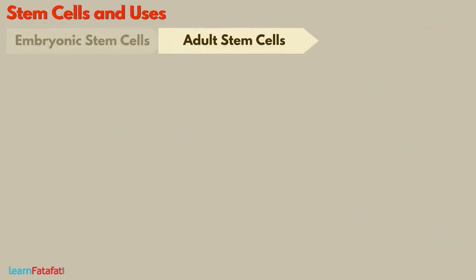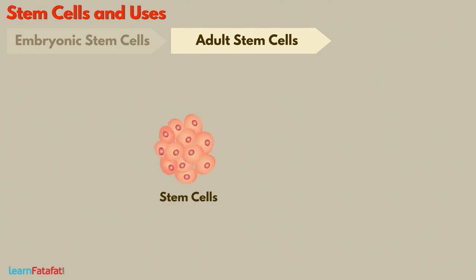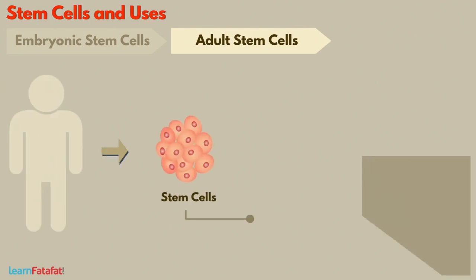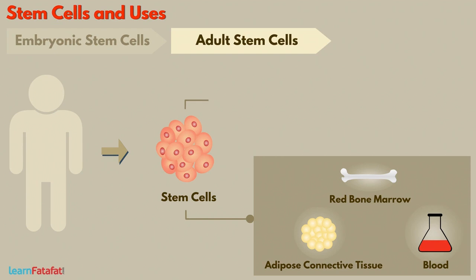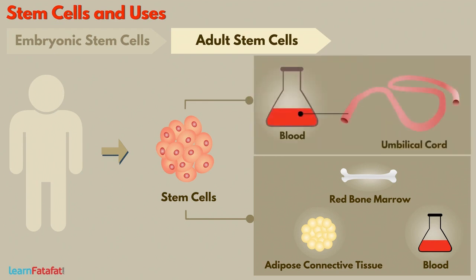Adult Stem Cells: These are the stem cells obtained from the adult human body. They are found in red bone marrow, adipose connective tissue, and blood. These are also present in umbilical cord blood obtained after birth.